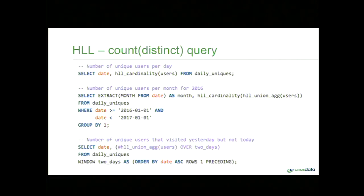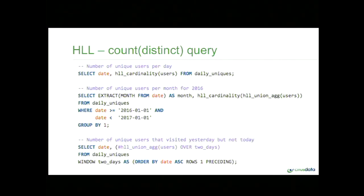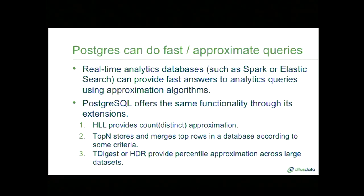For example: how many monthly unique users did my website receive over the past year? Or the number of unique users who visited my website yesterday but not today. These are just a few examples of queries that return in milliseconds in an HLL world, but would require a lot of work with regular count distinct. In summary, real-time analytics is an emerging workload. HLL provides count distinct approximations through extending the data type, user-defined functions, and aggregate function APIs.